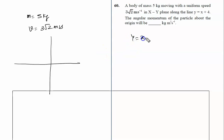The equation y = x + 4 is given to us. When x = 0, y = 4, so this particle is at point (0,4). Similarly, when y = 0, x = -4, so this line is cutting at (-4,0). This is the line along which the particle is moving.